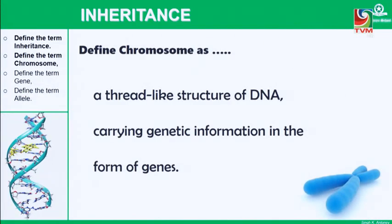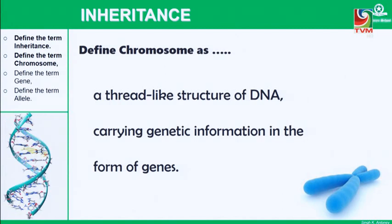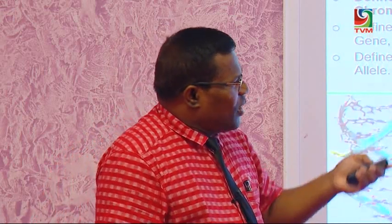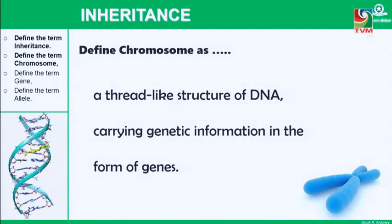A chromosome is defined as a thread-like structure of DNA carrying genetic information in the form of genes. Chemically, chromosomes are made up of DNA and proteins known as histones — a set of eight core histone proteins — and the strand of DNA molecule winds around them.